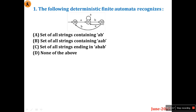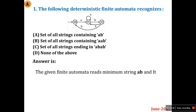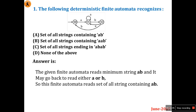The minimum string to reach Q2 is 'ab'. After Q2, it may go back to the initial state on reading 'b' and again read 'ab', or it may go back to Q1 and read 'ab'. So the finite automaton reads the set of all strings containing 'ab'.